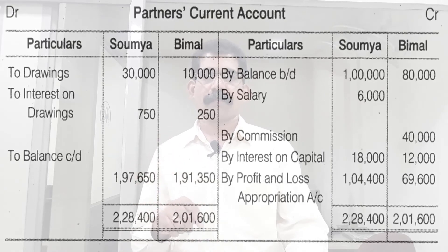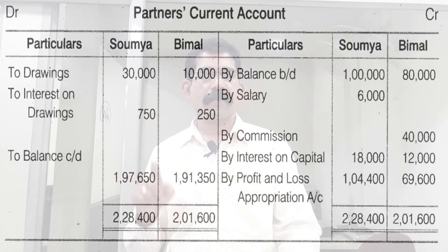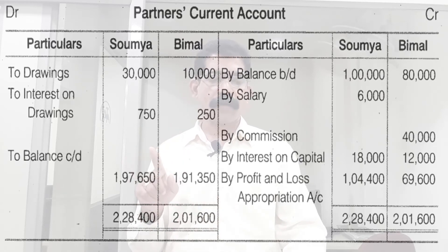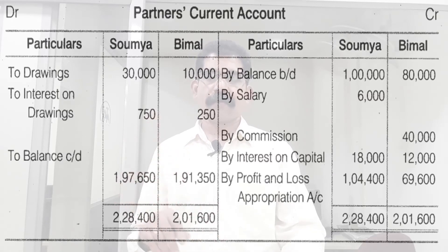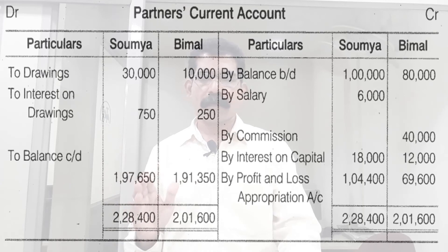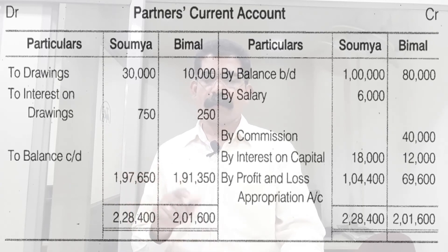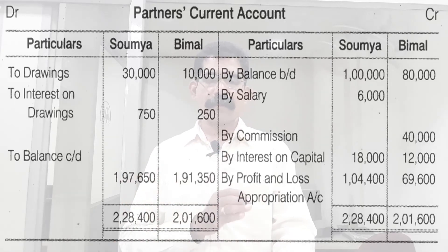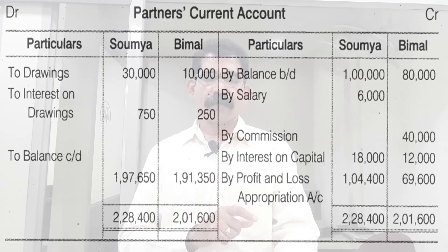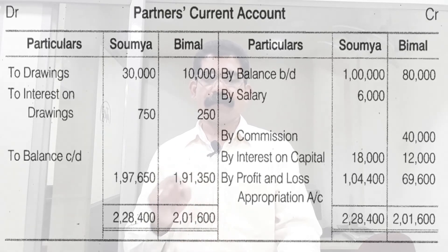Next: to interest on drawings. From the credit side of the P&L Appropriation Account, interest on drawings charged: Soumya Rs. 750, Bimel Rs. 250. All items are now entered. The credit side is higher, so total the higher side. Soumya total: Rs. 2,28,400. Bimel total: Rs. 2,16,000. Transfer total to debit side; the difference is the closing balance of their current account. Soumya's closing balance: Rs. 1,97,650. Bimel's closing balance: Rs. 1,91,350.